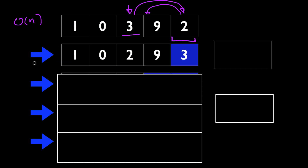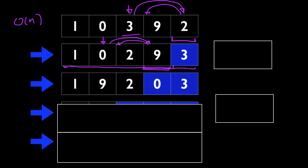After that, this array will look like this. And then we'll repeat the process with the second last index. We're going to ask ourselves what should the value be at the second last index, and we'll determine that by picking a random value out of these 4 values, because the number 3 is already fixed at the last index. We might pick, for example, the number 0 for the second last index, and in that case we'll swap 0 and 9, and the array will look like this. After that, we'll ask ourselves what should the value be at index 2, and we'll pick a random value out of these 3 values. We might happen to pick the same value that's already in that index, and in that case we don't have to do anything, so the array will look the same.